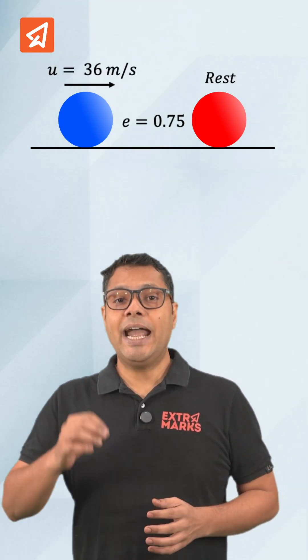That means here u is equal to 36 meter per second and M1 and M2 are 4 kg and 5 kg respectively.